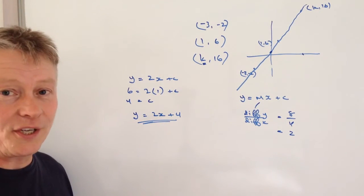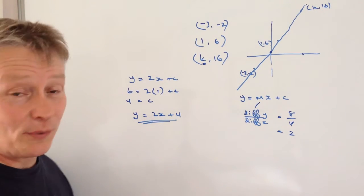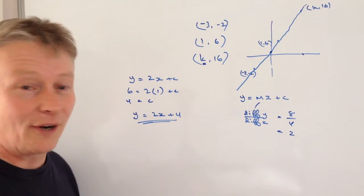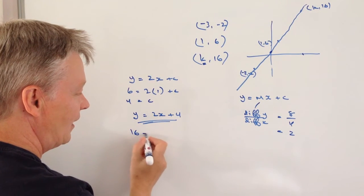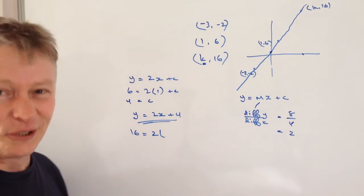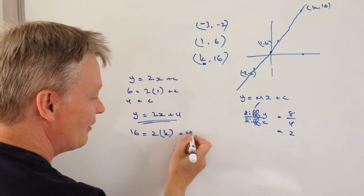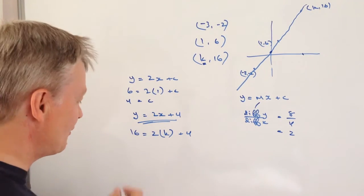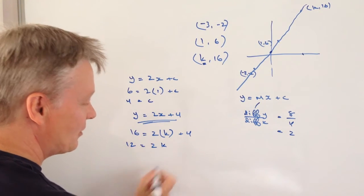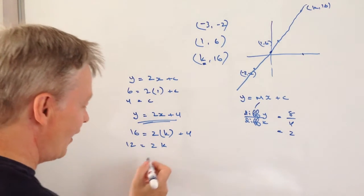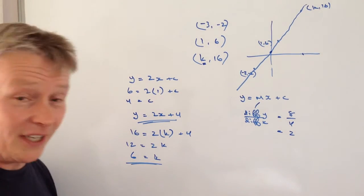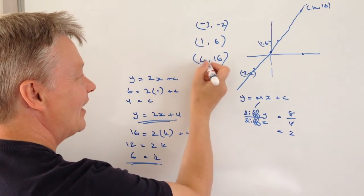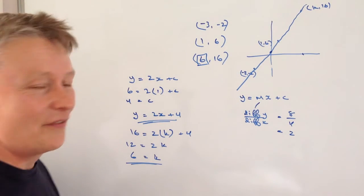To answer the question, we've got this value of K, which as we mentioned is really the value of X, so we can plug that into this equation because we know everything else about it. We've got 16 = 2K + 4. Using a little bit of algebra, 16 - 4 = 12 = 2K, divide through by 2, so K = 6. In this particular equation, the value of K is 6, and that answers the question.